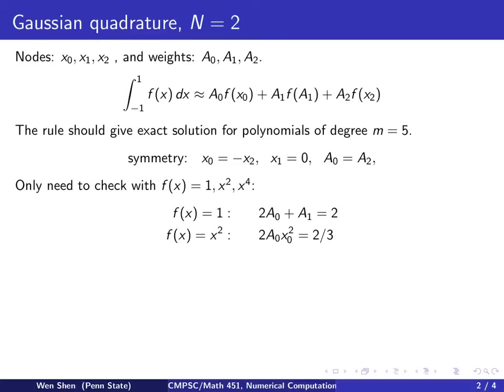So I basically need to check only one term, that is A0 and then x0 squared, and this shall be multiplied by 2 because I have two of the same. And that shall equal to the integral of x squared, which is 2/3.